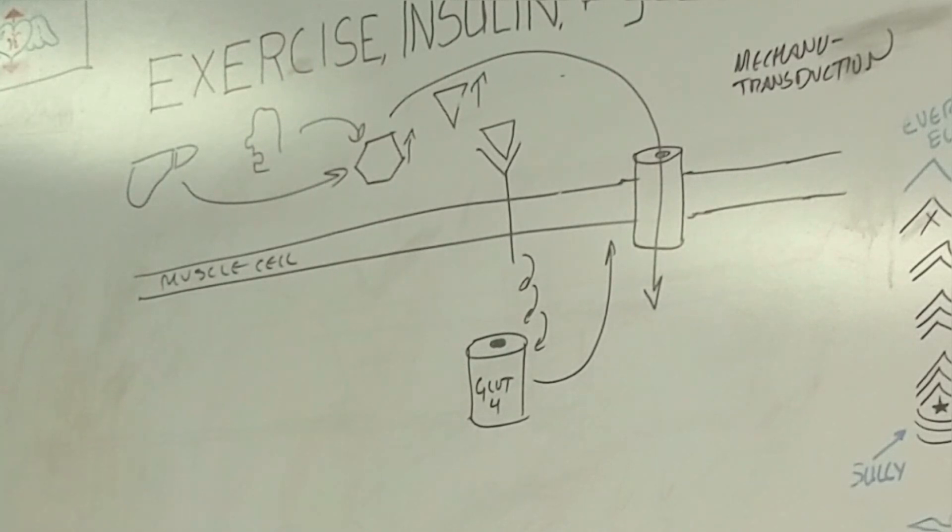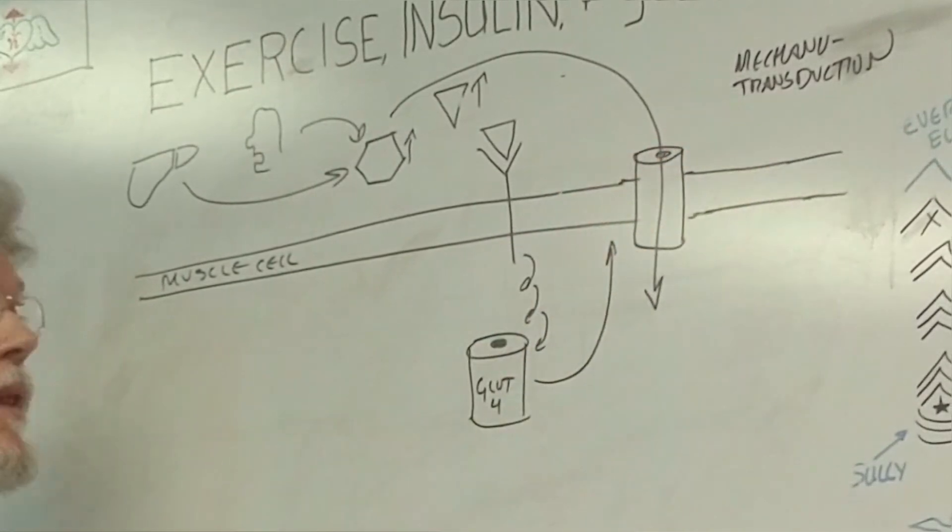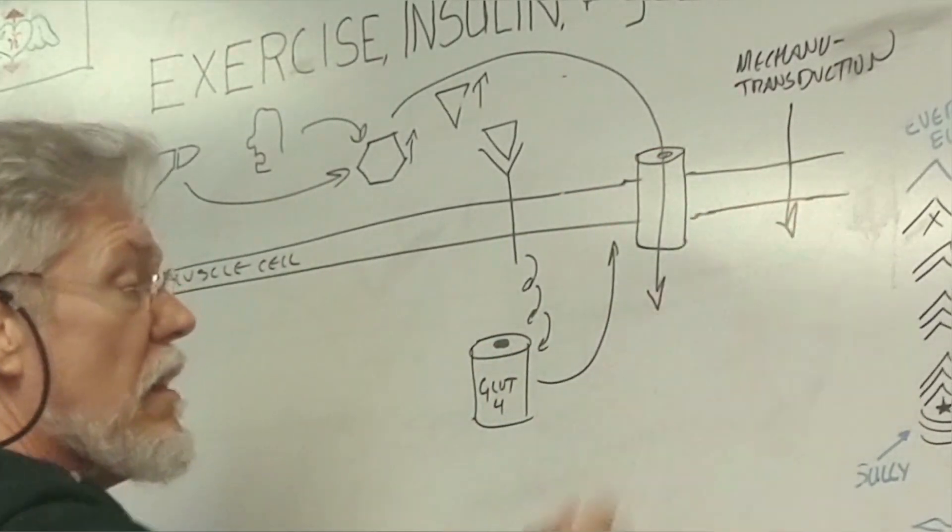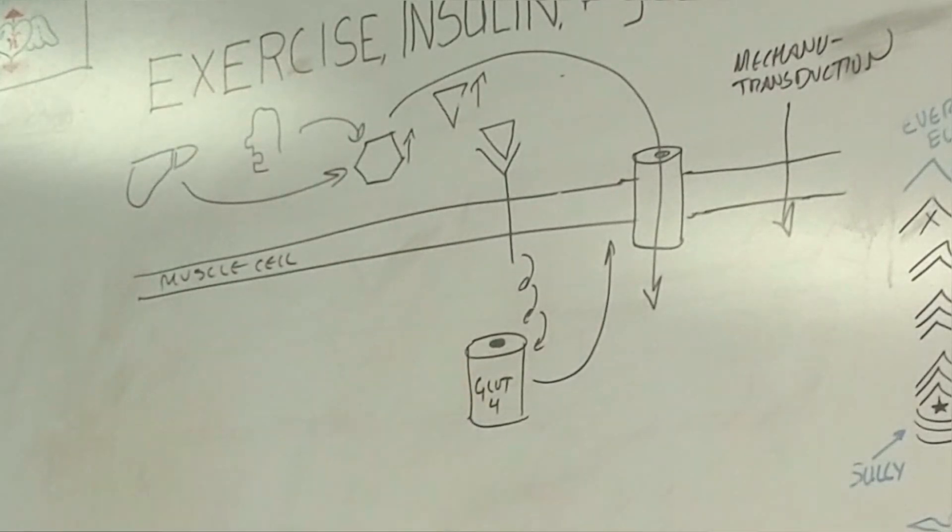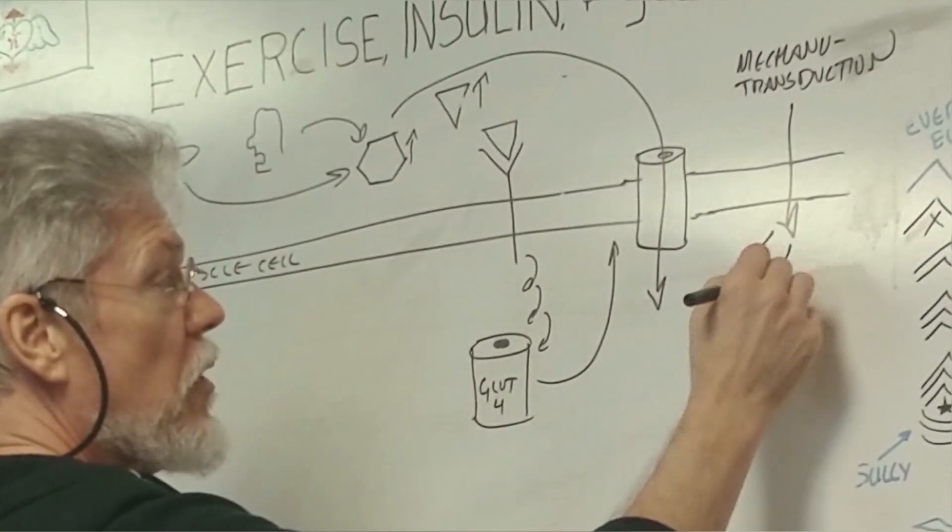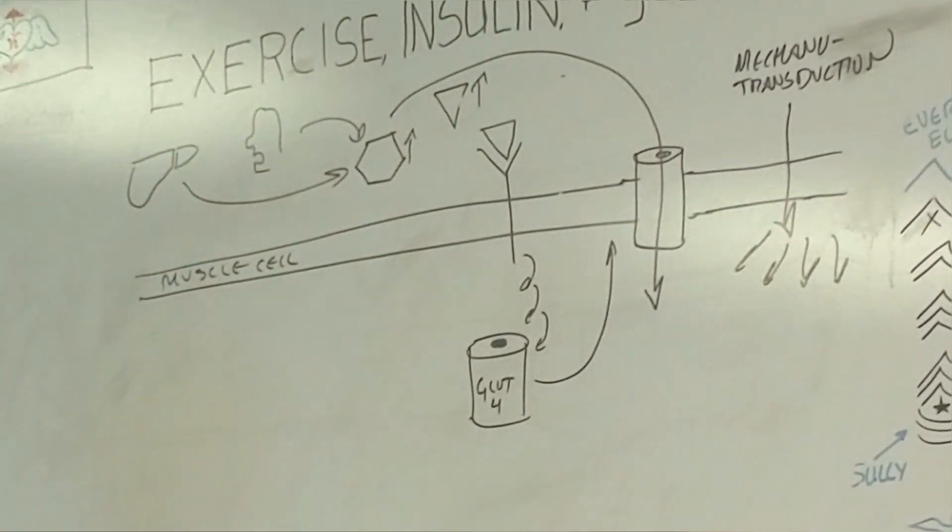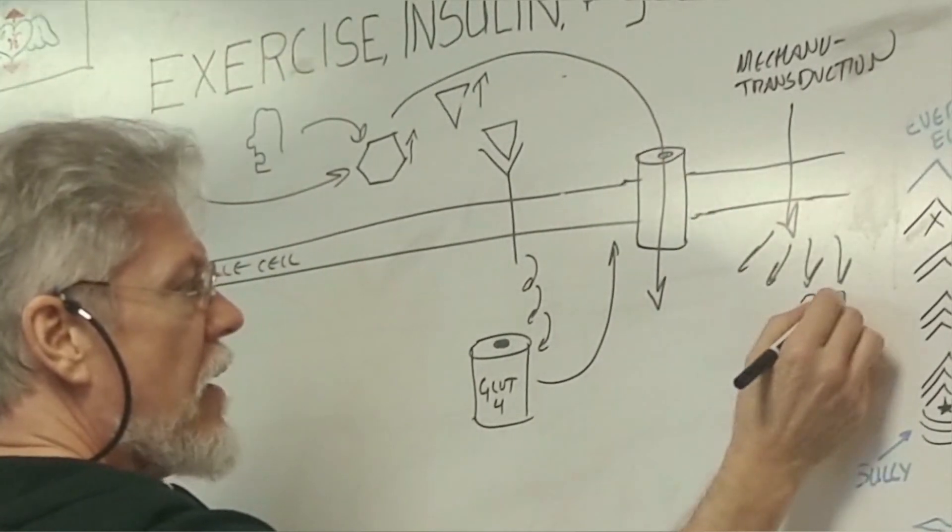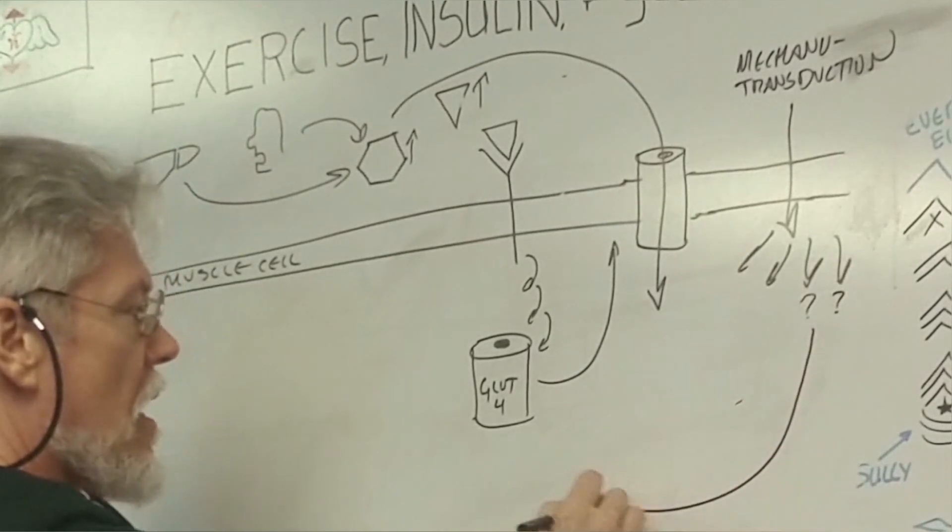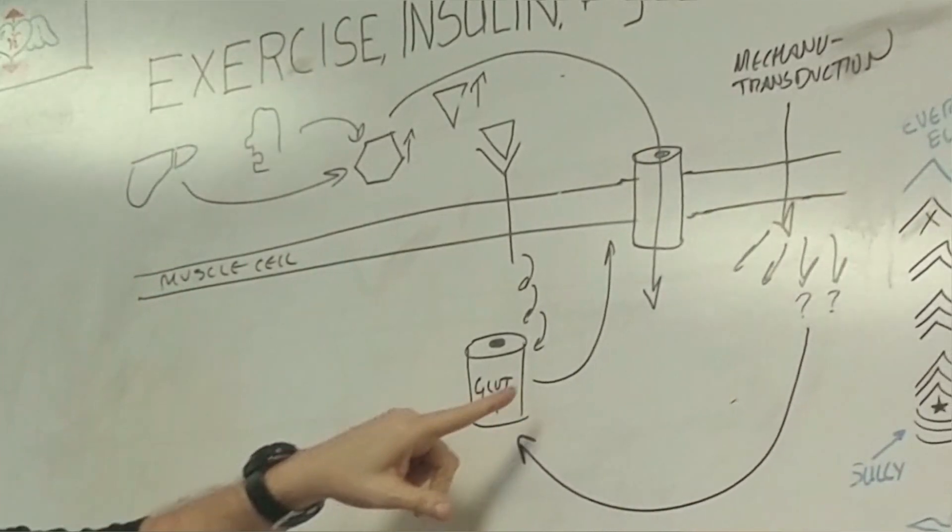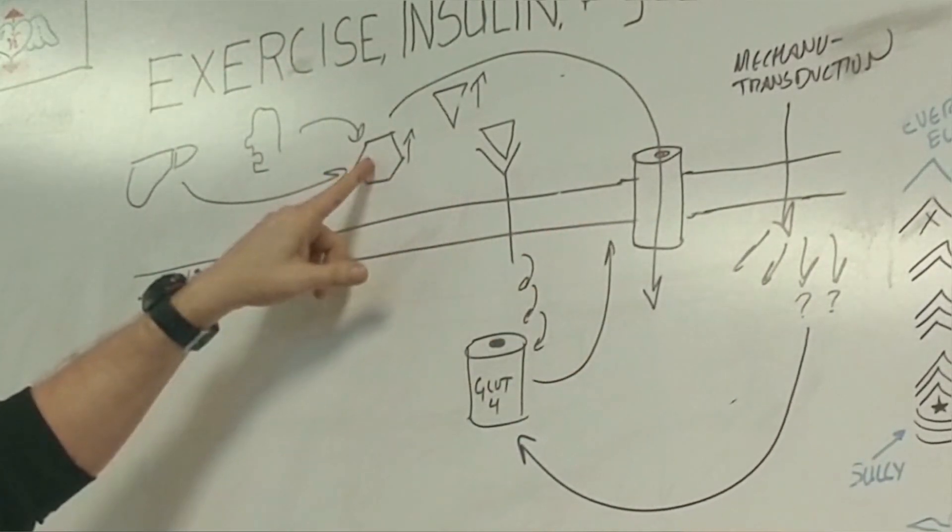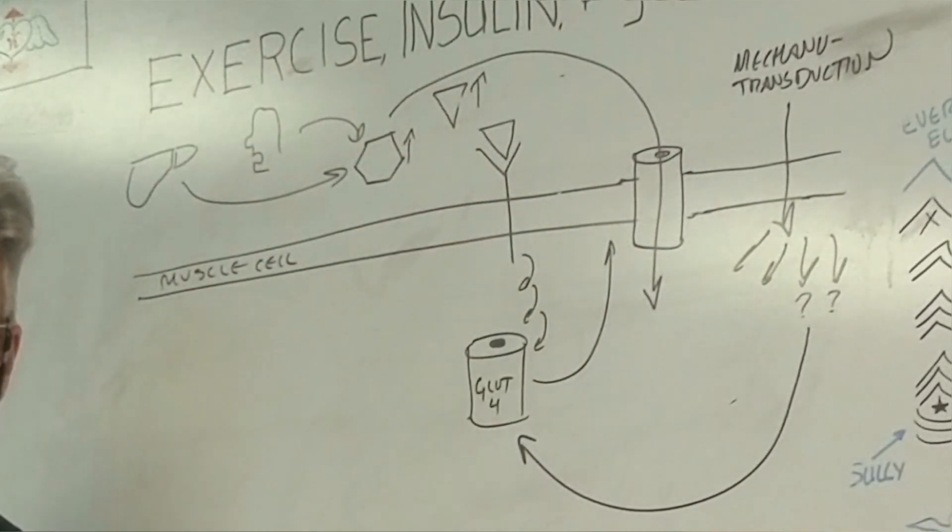So in the case of exercise, you get a complex mechanotransduction event that works kind of like insulin. And it works through multiple pathways, some of which are still being elucidated by research, calcium, AMPK signaling, and so on. And some of these signals are not yet known. But the bottom line is that they result in GLUT4 translocation to the cell membrane so that glucose can get into the muscle cell.